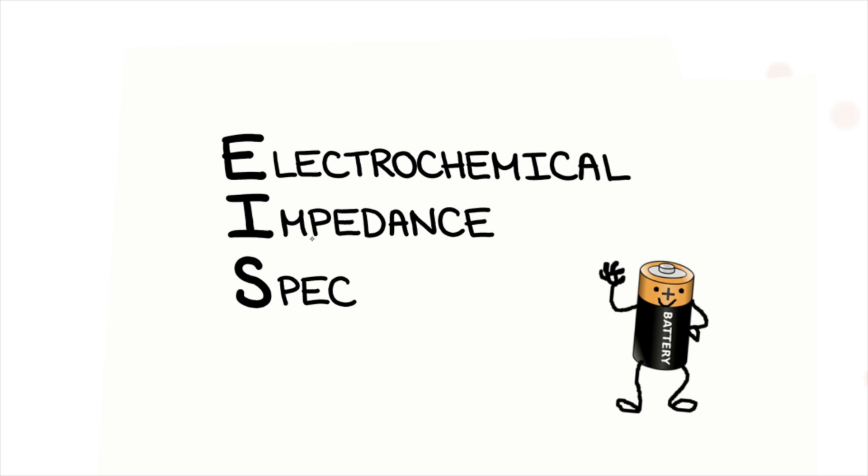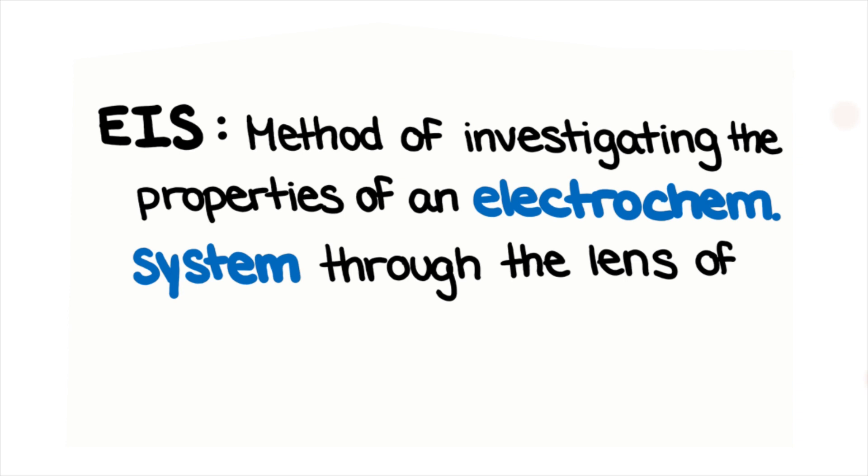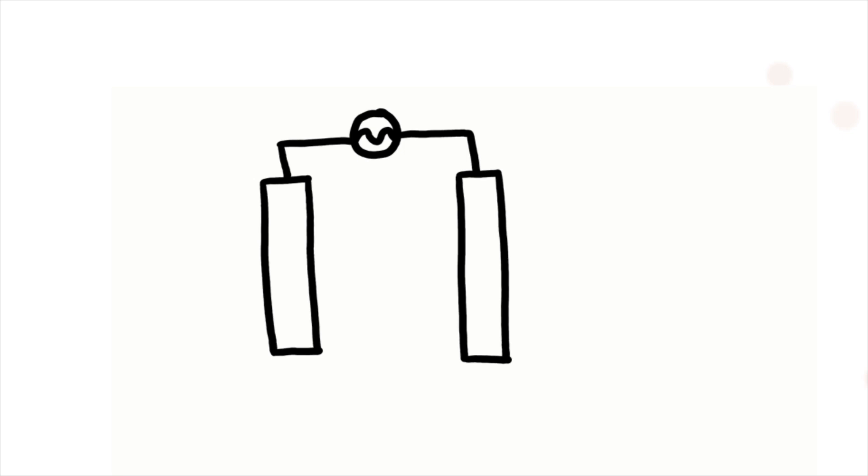Electrochemical impedance spectroscopy, or EIS, is a method that can be used to monitor and test batteries. In practice, this technique can be applied to any system that responds to current. EIS investigates the properties of an electrochemical system through the lens of impedance, which can be thought of as the AC analog of resistance in a DC circuit.